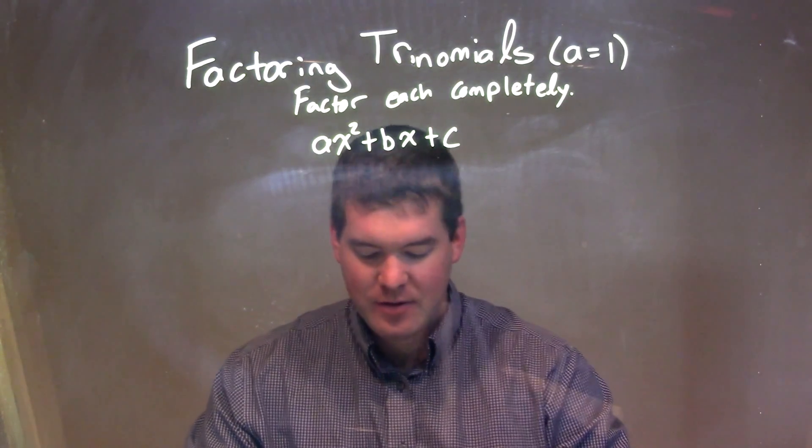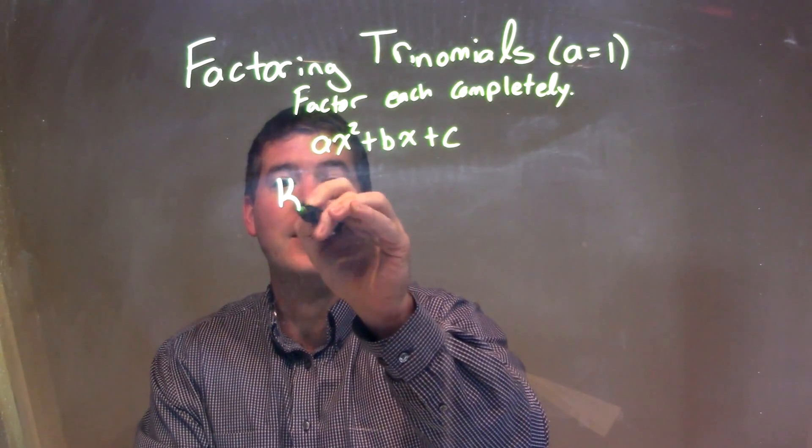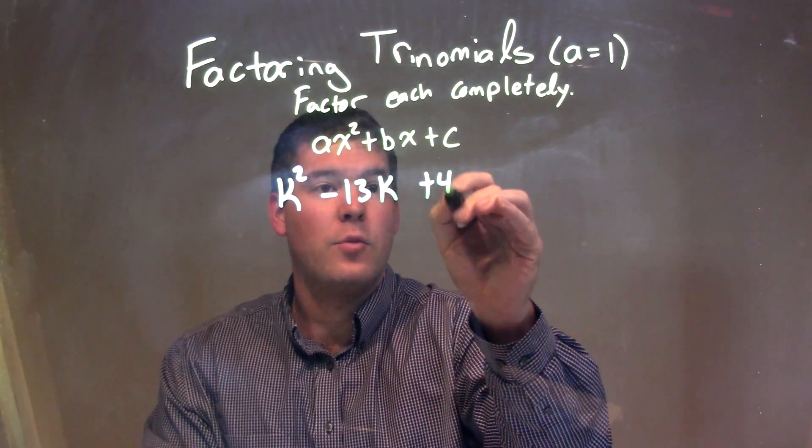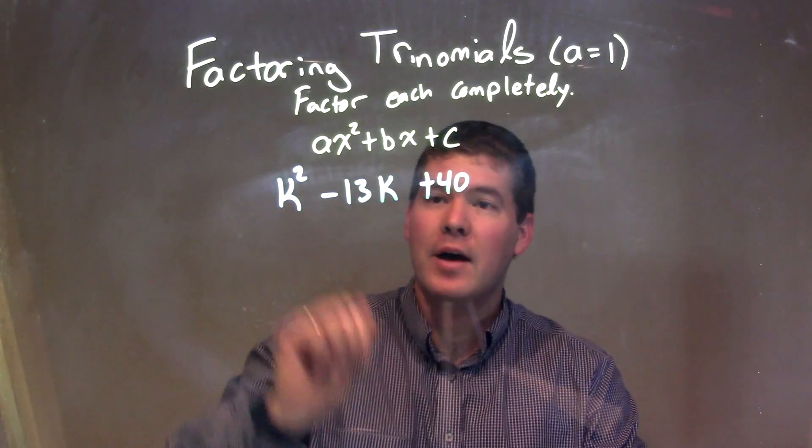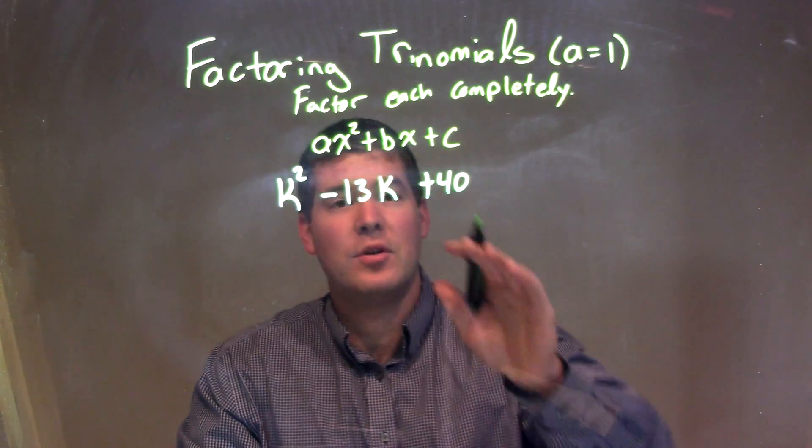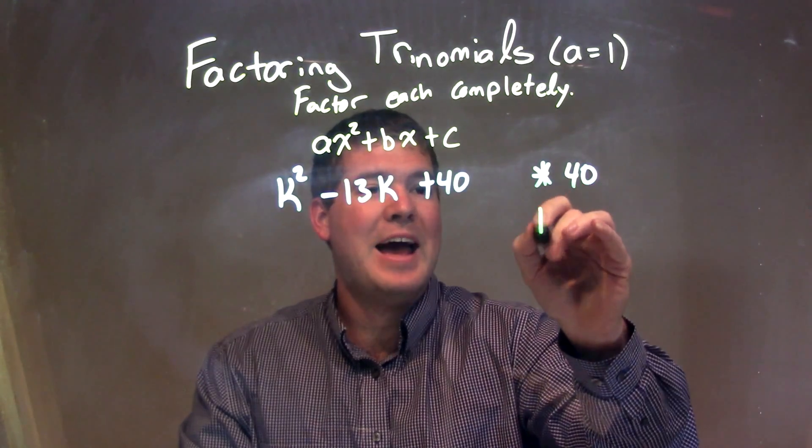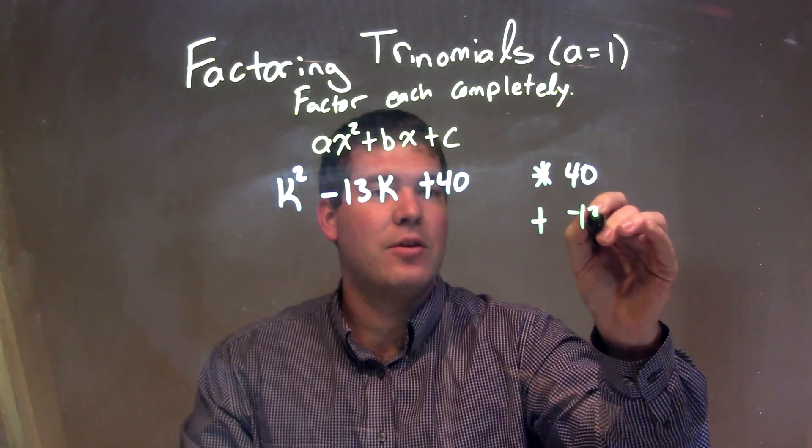So if I was given this trinomial k squared minus 13k plus 40, our a value is 1. So now I'm going to ask myself the question, what two numbers multiply to be a positive 40 but add to be a negative 13?